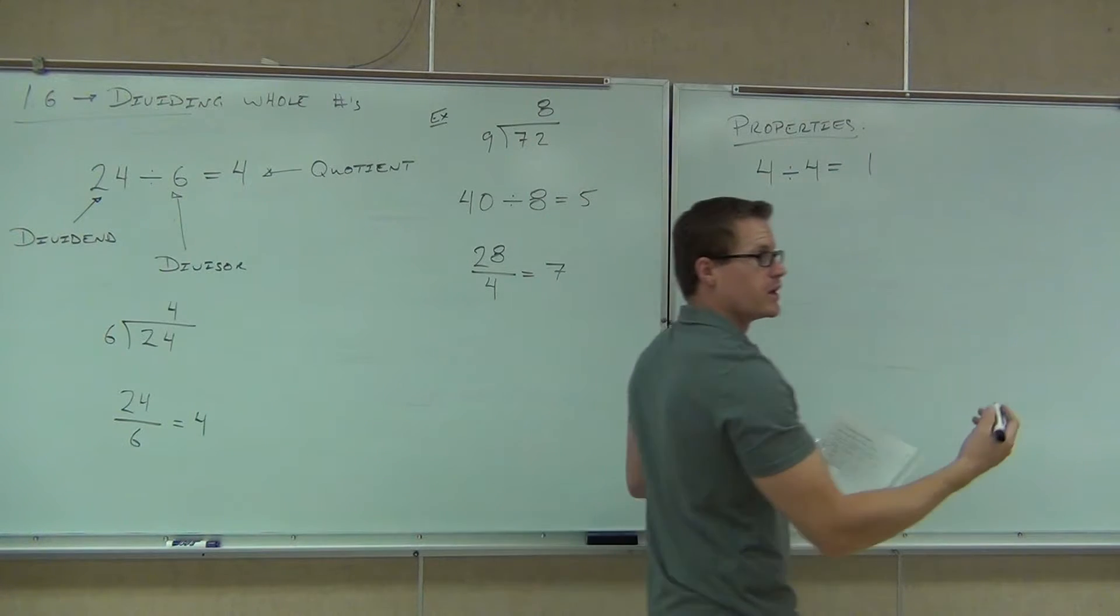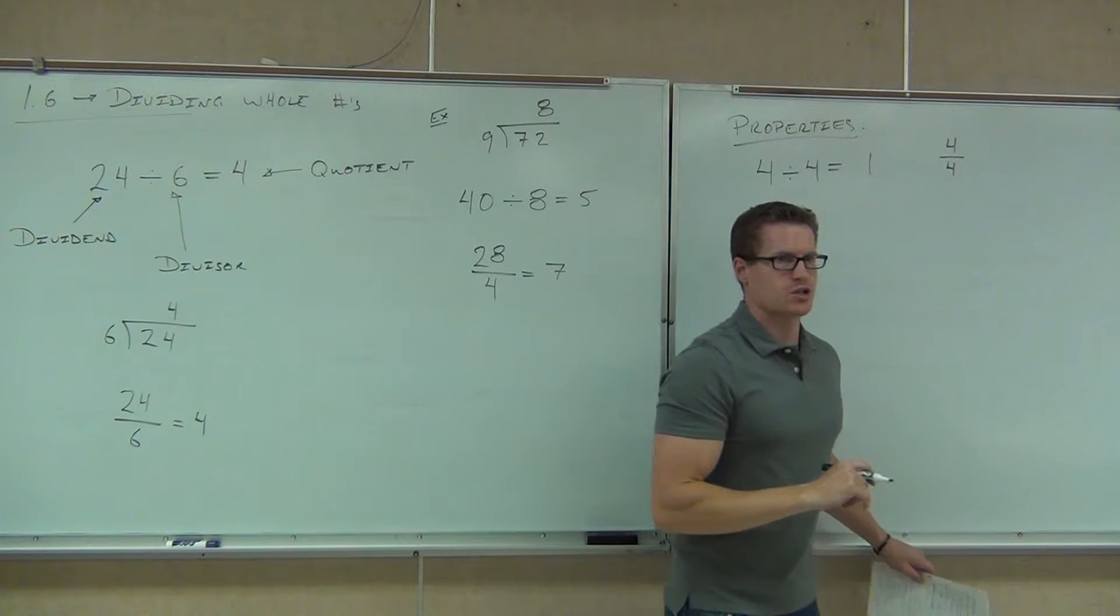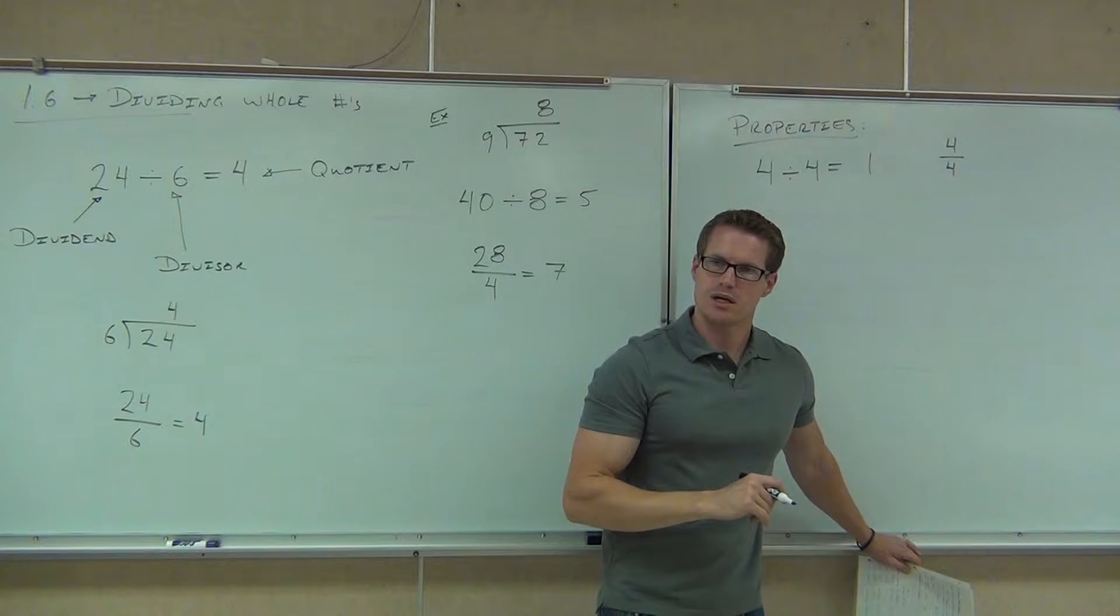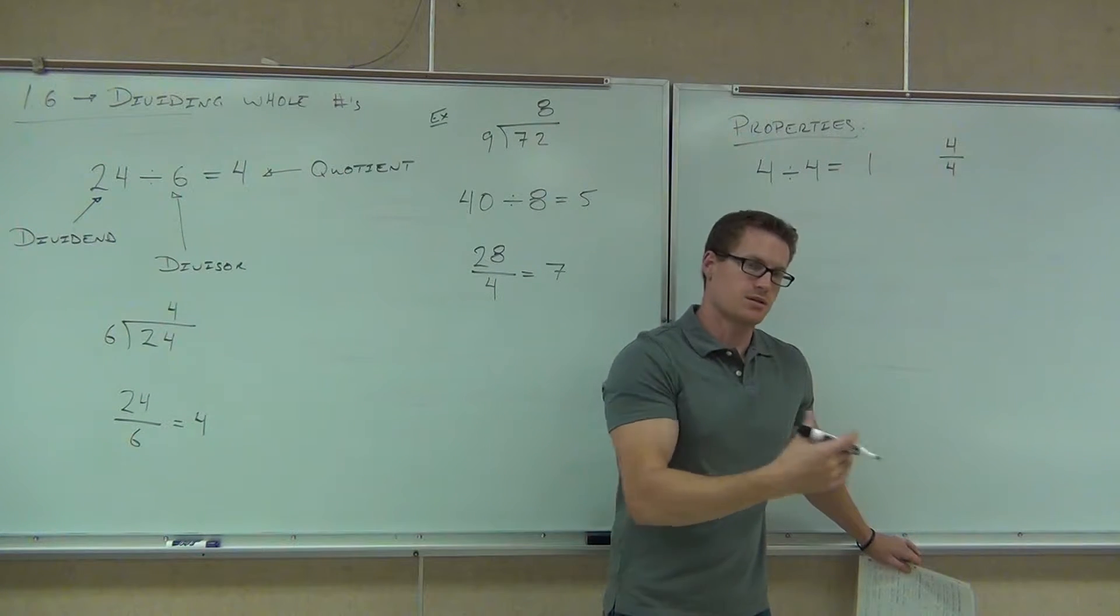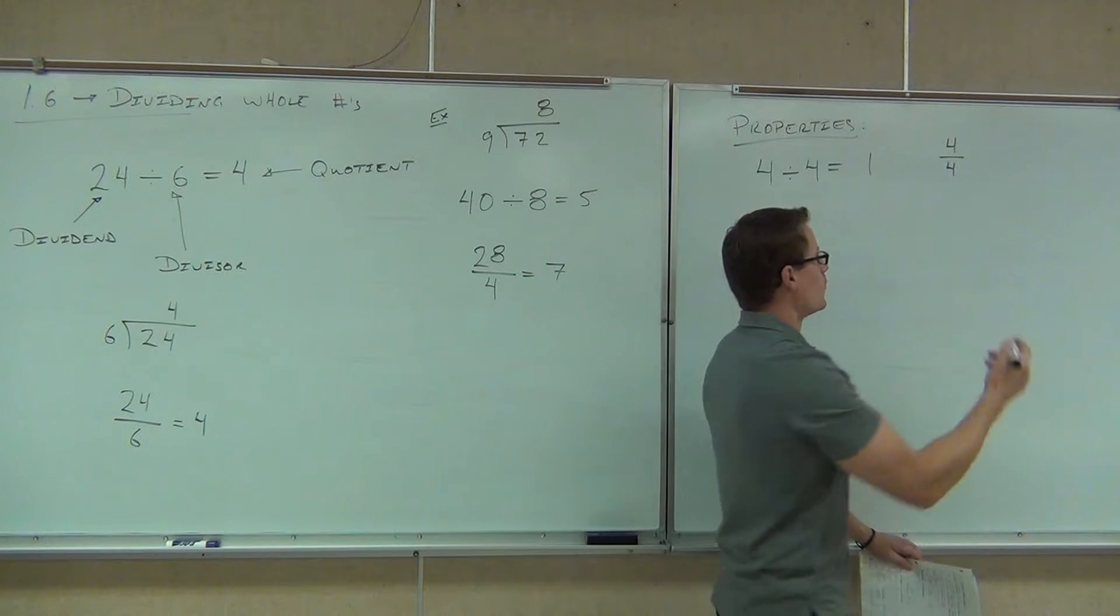You know what that goes to show you? Since you said that, every time we see a fraction of a number over itself, what are we going to get? One. One. That's because, well, a whole. It is a whole. It's also a division problem. Four divided by four, that's a whole.